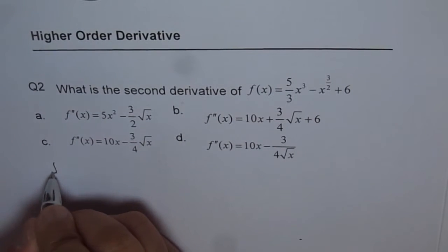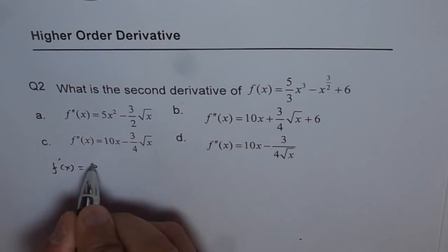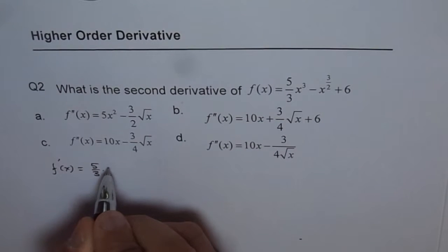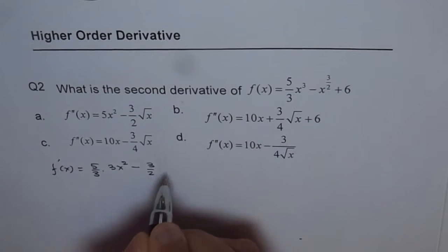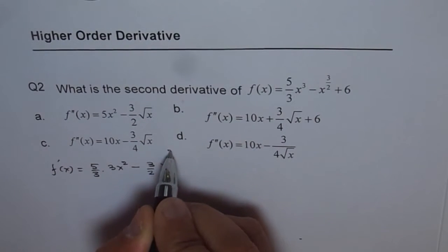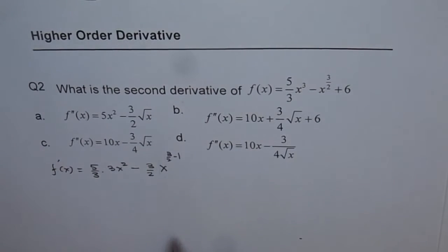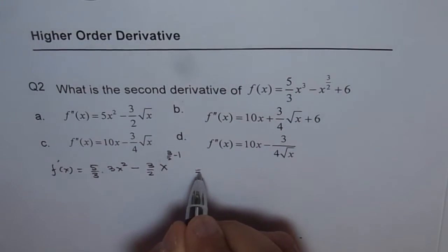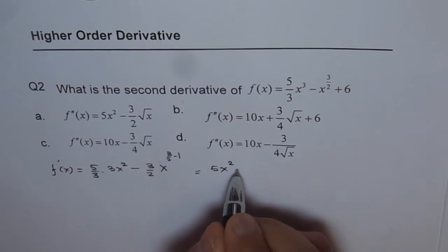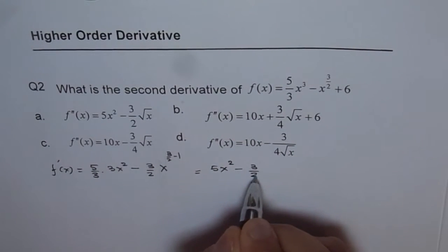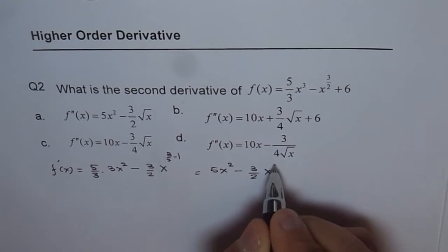The first derivative will be equal to 5 over 3 times 3x squared minus 3 over 2 times x to the power of 3 over 2 minus 1 plus 0. We can simplify this to get 5x squared minus 3 over 2 x to the power of 1 over 2.